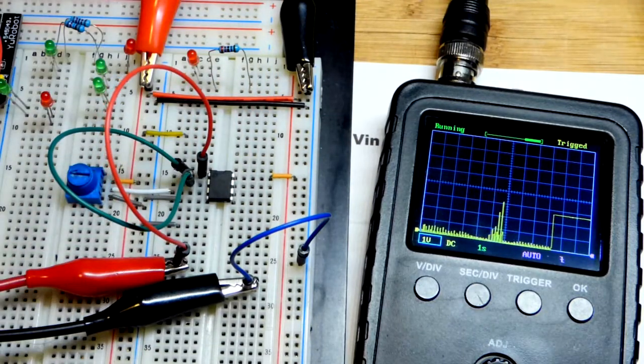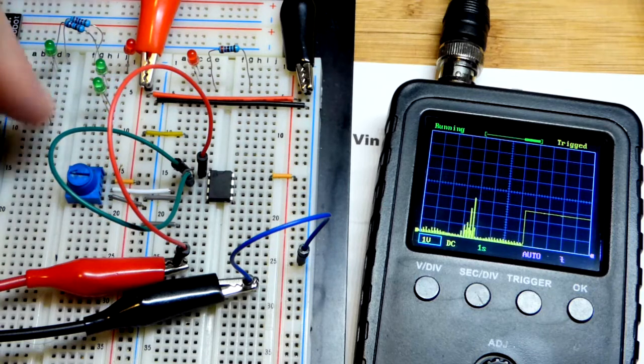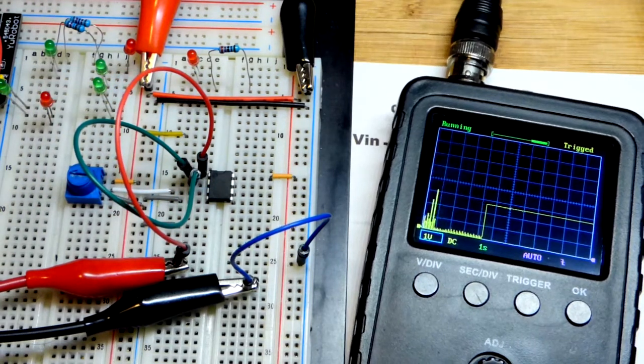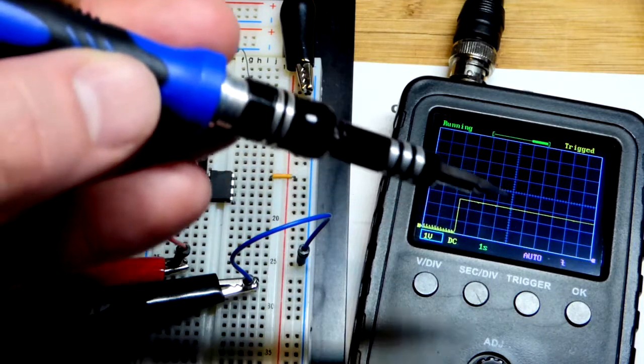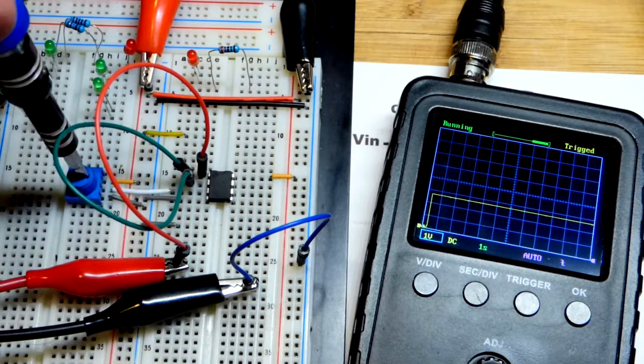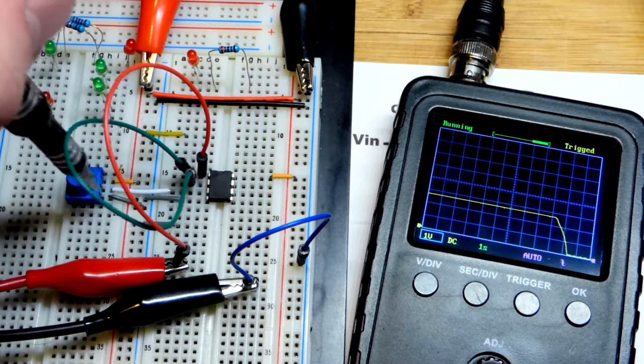And there you can see we have about three volts because the trim pot's set about halfway. And so if each one of these squares is one volt. If I turn the trim pot down, now you can see we get down to zero volts.